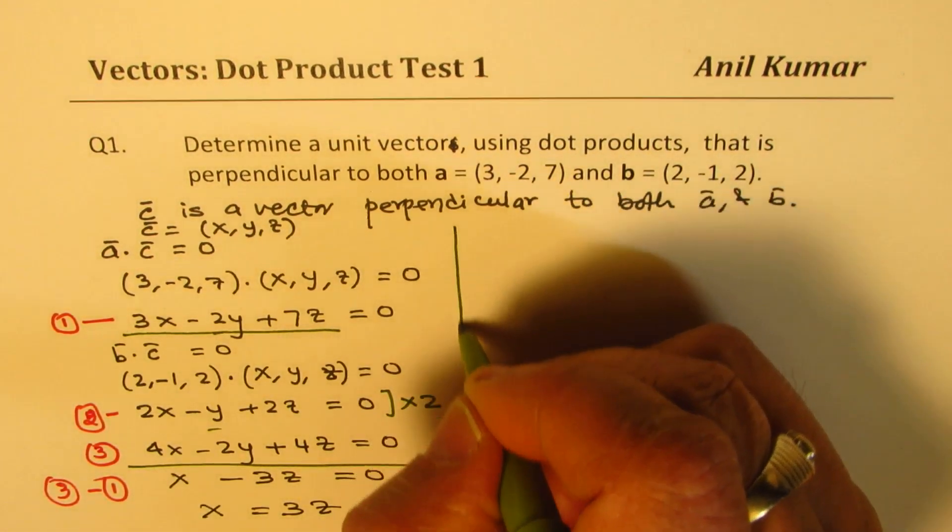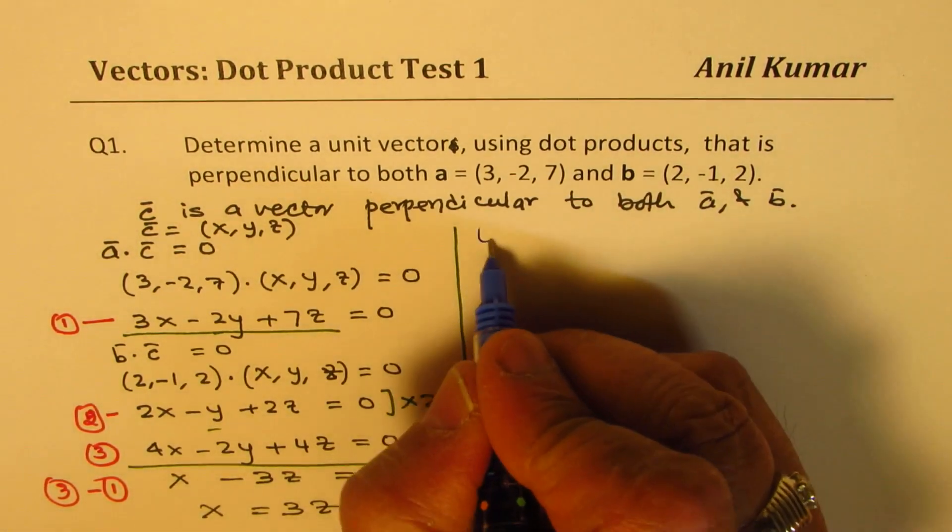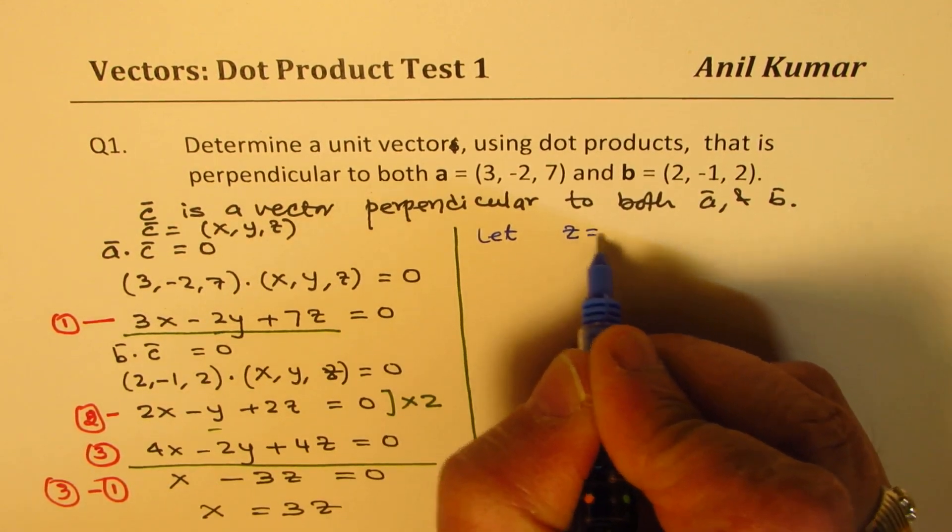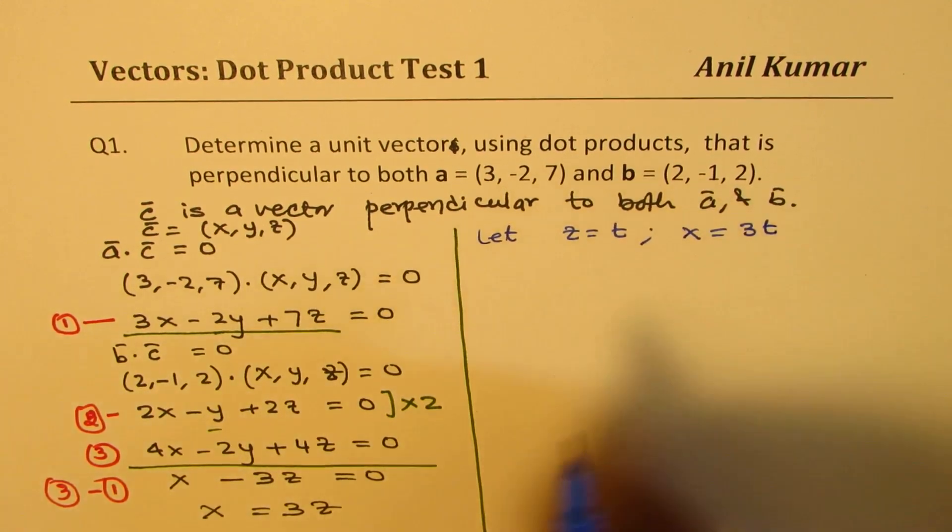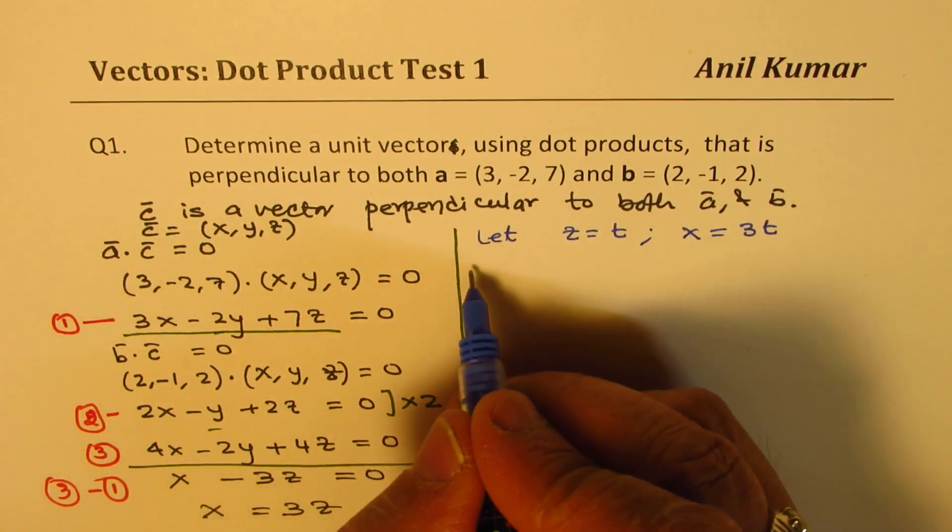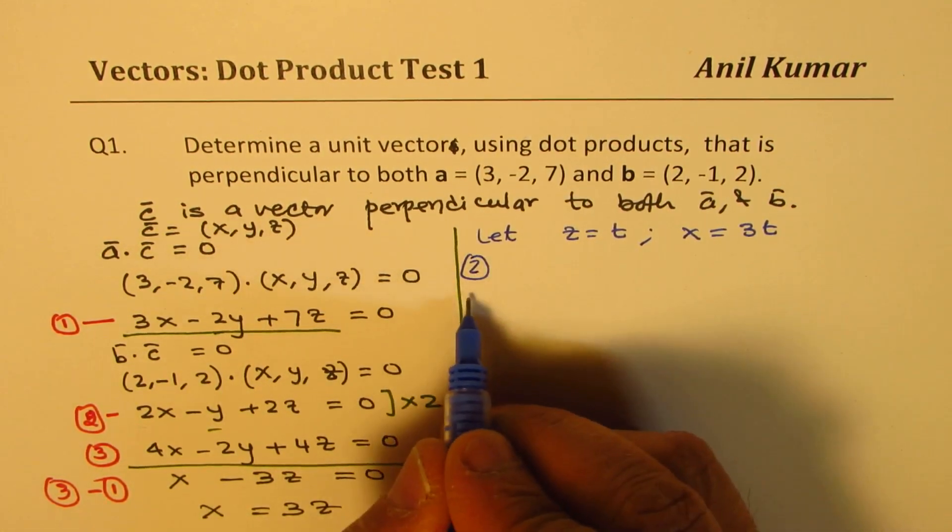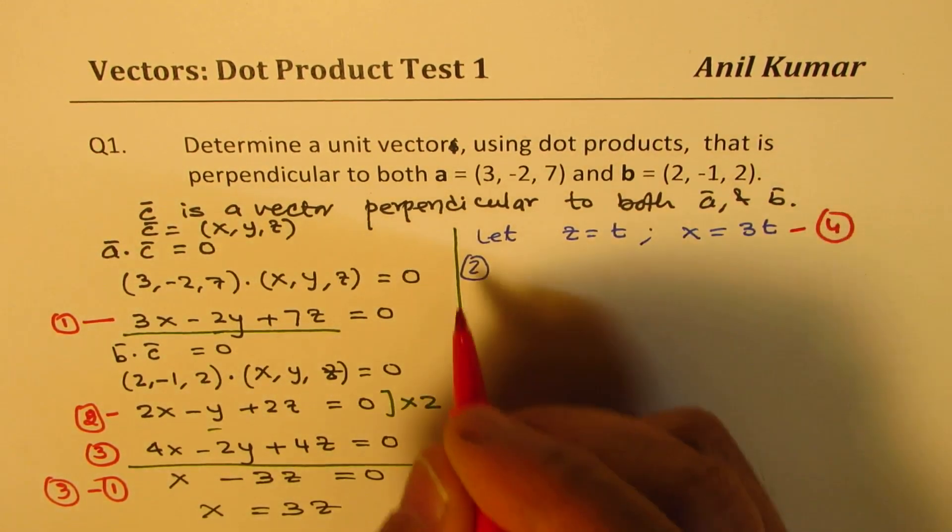So now we can actually define a parameter and find what x and z could be. So let's take z as equal to, let's say, t. So let's let z be some parameter t. In that case, x will be 3 times t. So if I put this value in one of our equations, let it be equation number 2. So equation number 2 is, we'll call this as equation number 4.